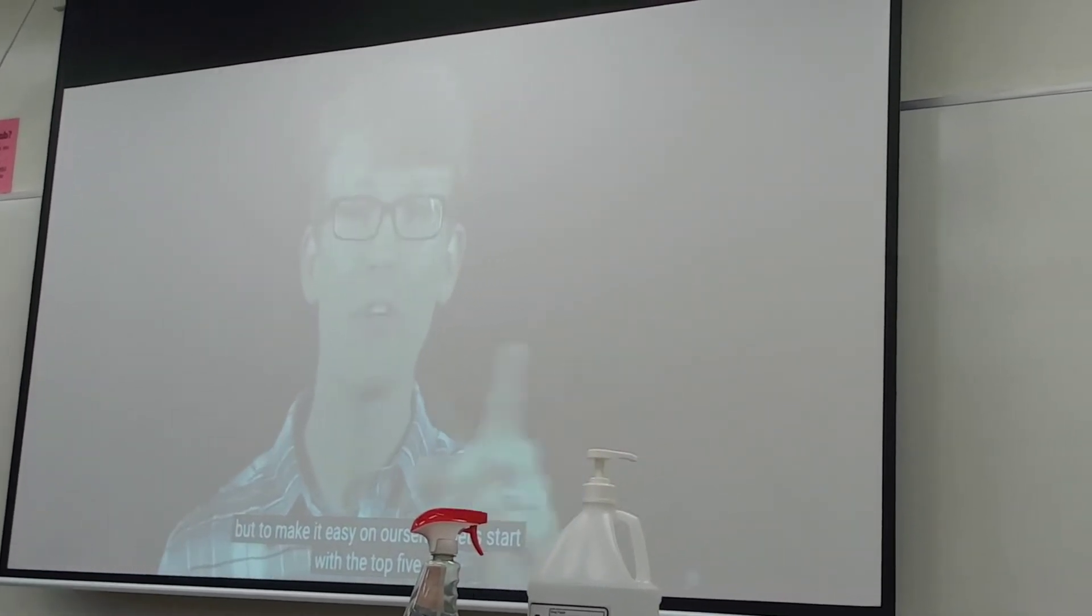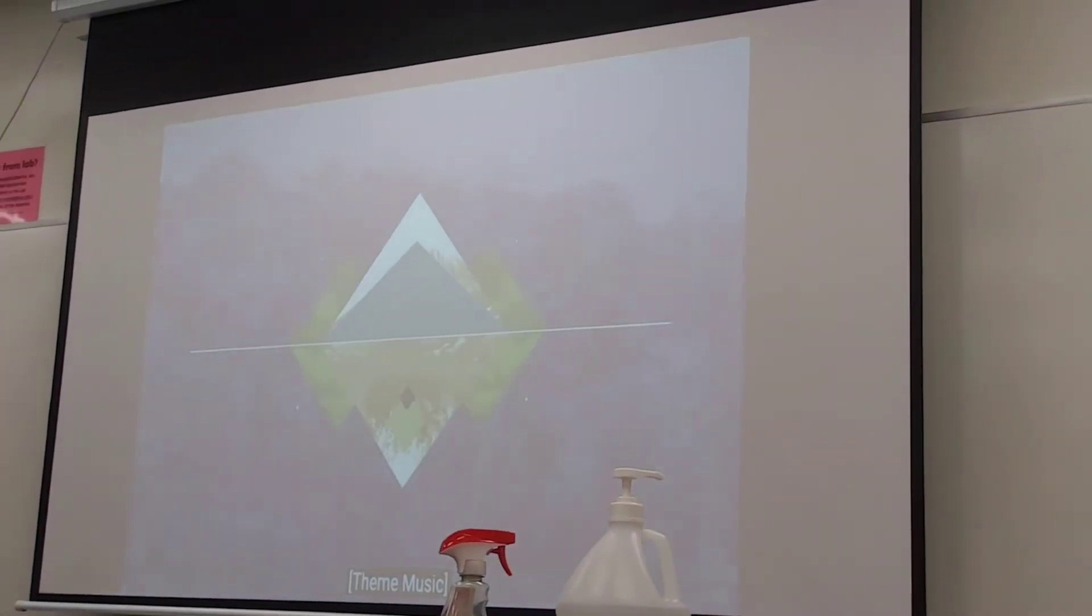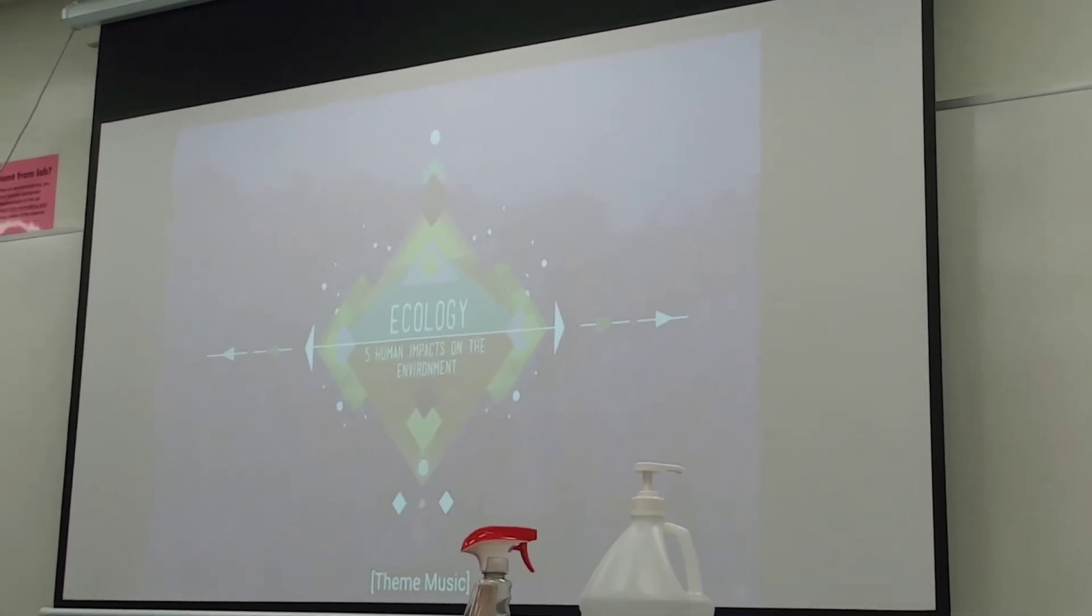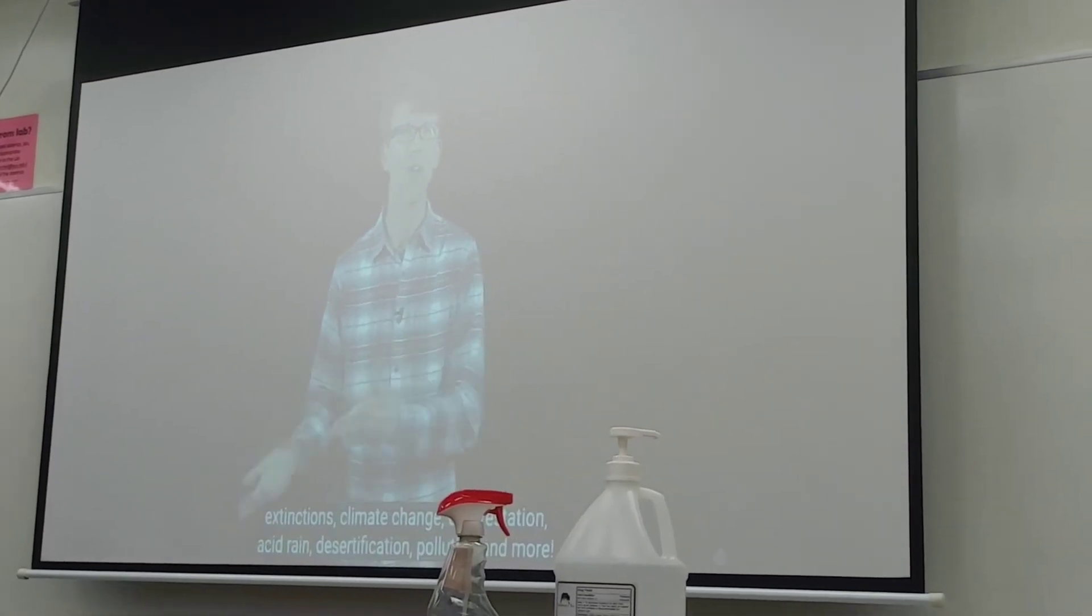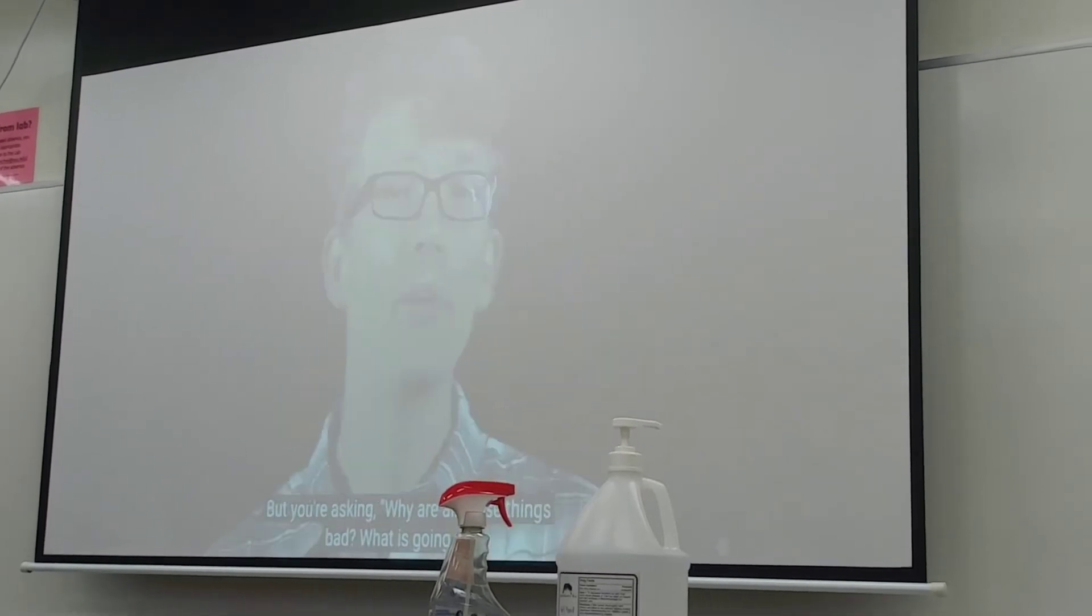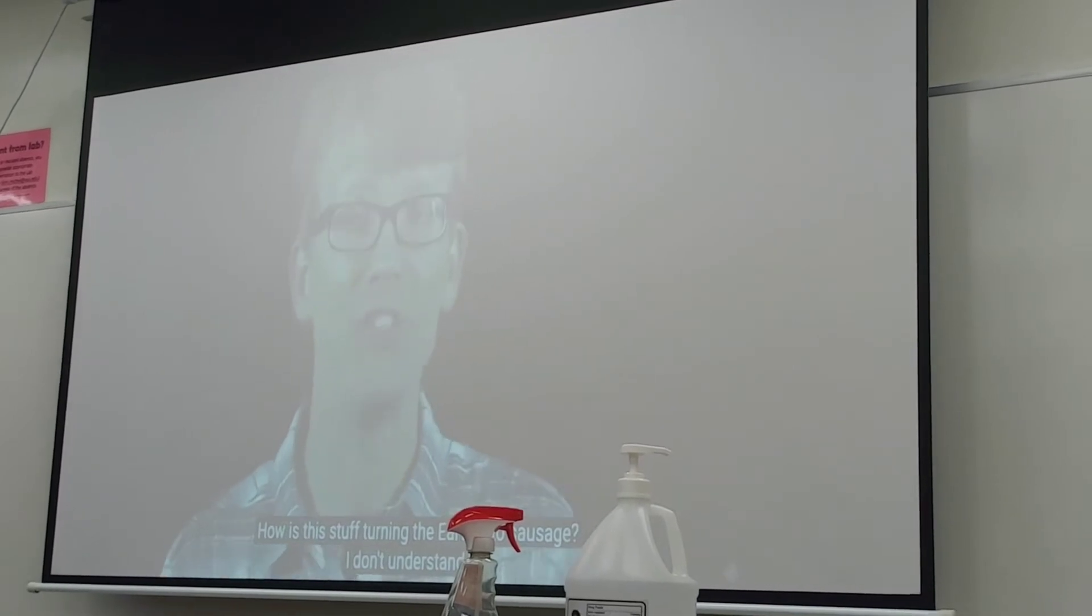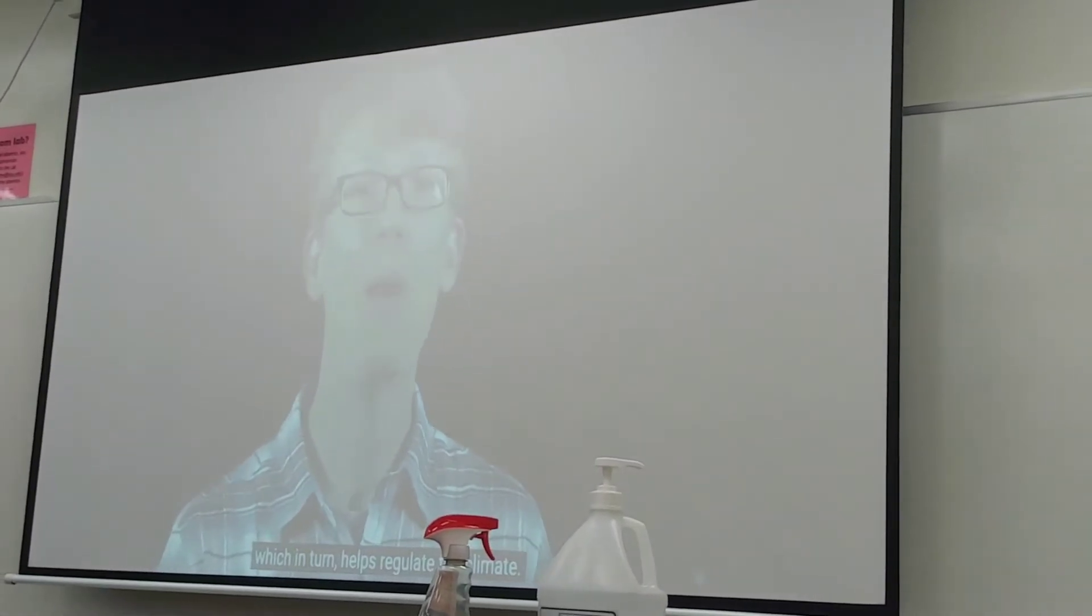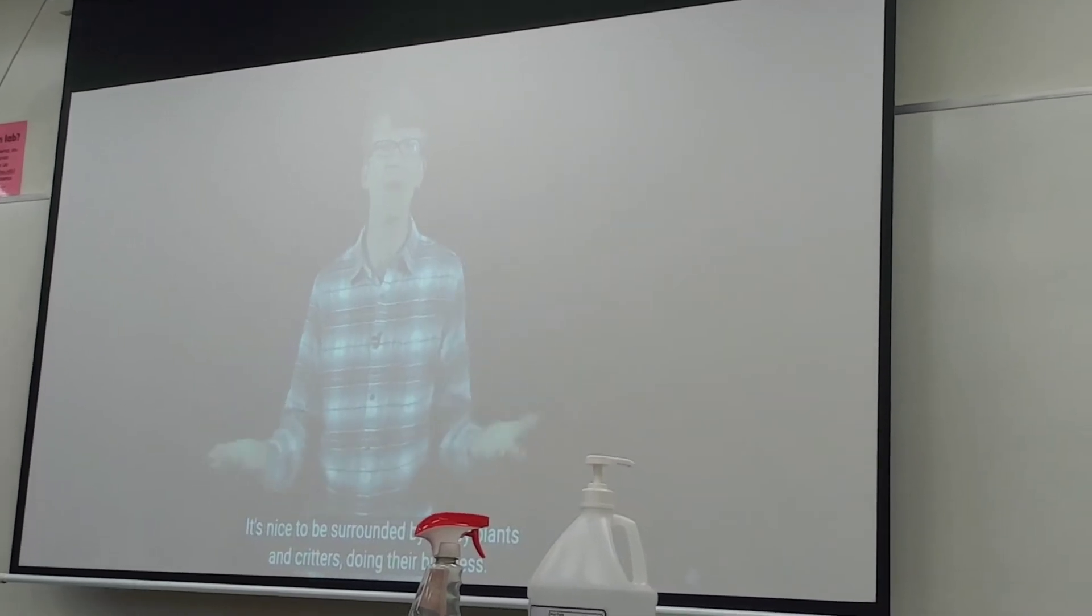You're going to hear about all the different ways that our behavior is affecting the biosphere: extinctions, climate change, deforestation, acid rain, desertification, pollution, and more. But you're asking, why are all those things bad? What's going on? Well, I do understand what you exhale and that your car belches out, which in turn helps regulate the climate. And finally, number four, ecosystems are just kind of awesome. It's nice to be surrounded by happy plants and critters doing their business.